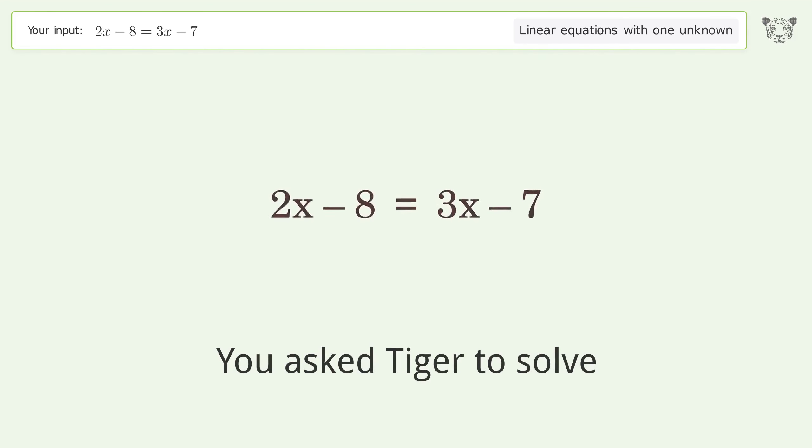You asked Tiger to solve this. This deals with linear equations with one unknown. The final result is x = -1.